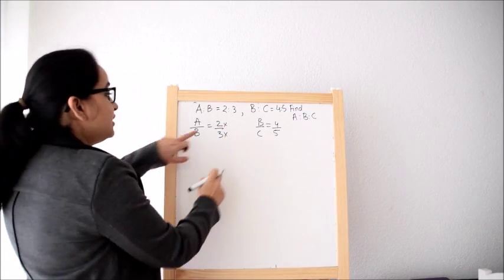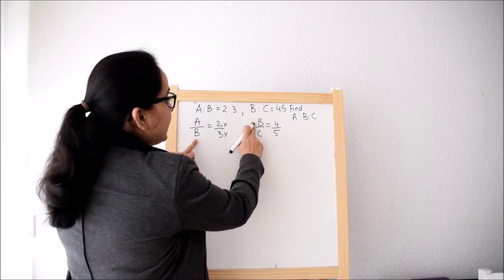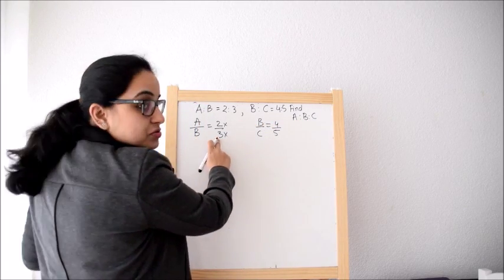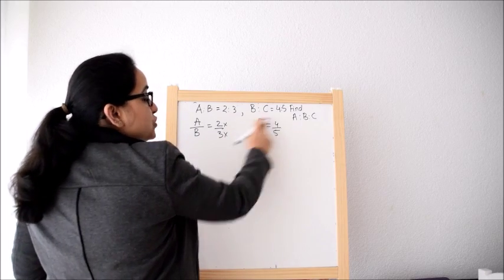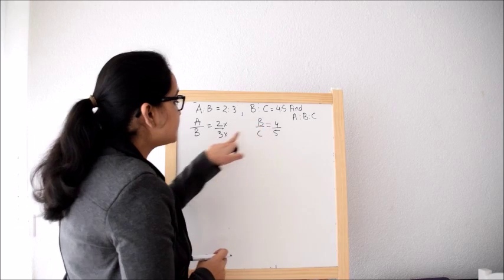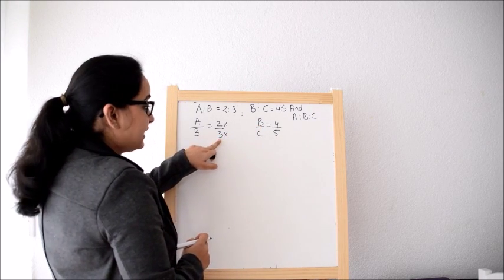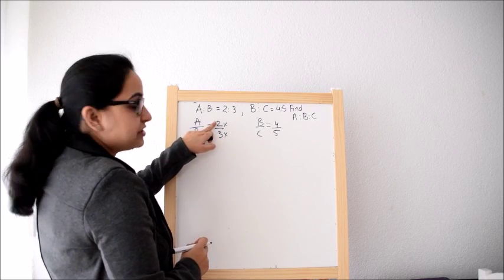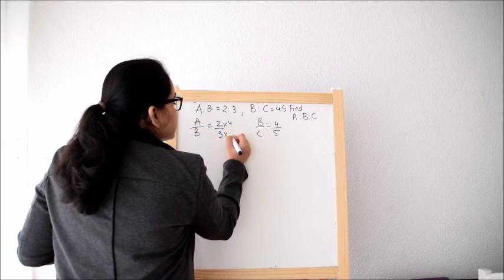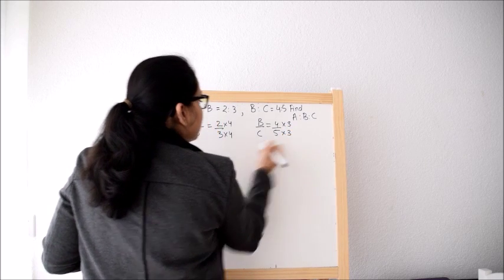So now what we have to find A is to B is to C. And here we have B in both. So here B is 3 and here B is 4. So to make B equal, we have to multiply this by 4 and we have to multiply this by 3. So if we are multiplying this by 4, then we have to multiply this also by 4. So we will multiply this by 4 and we will multiply this by 3.